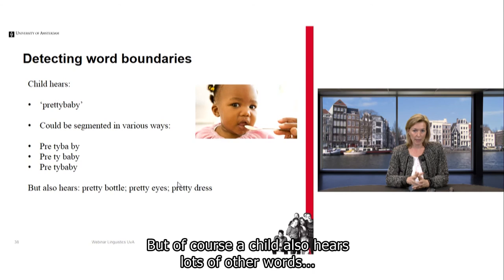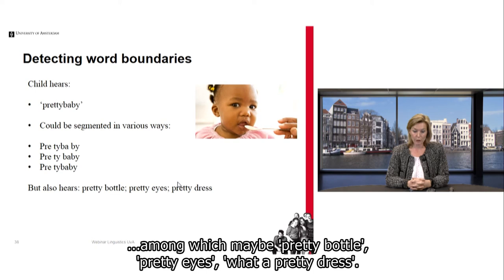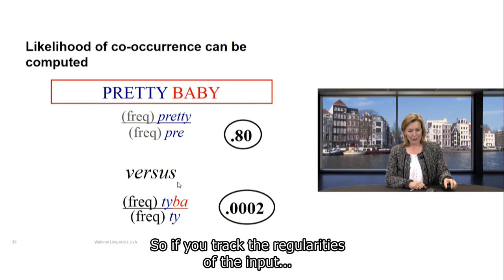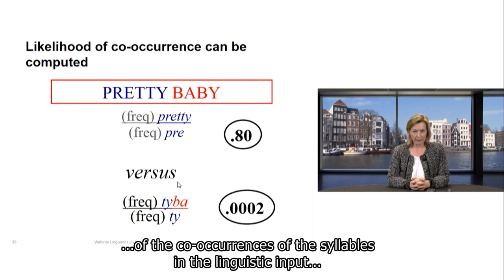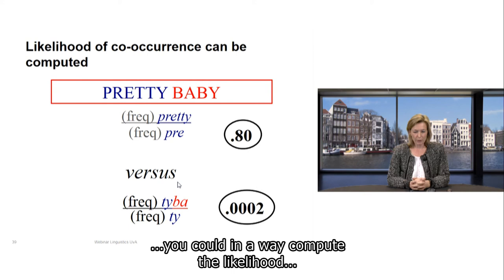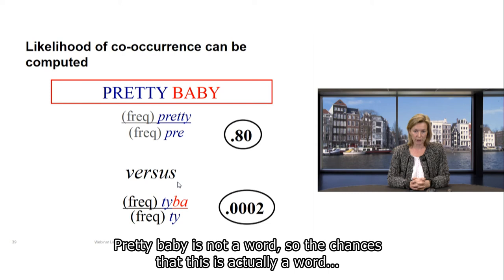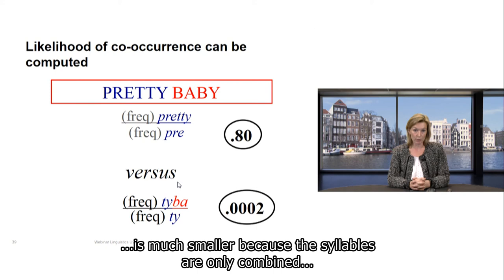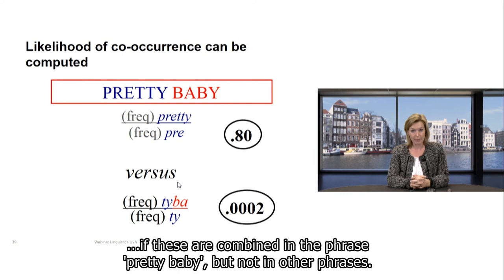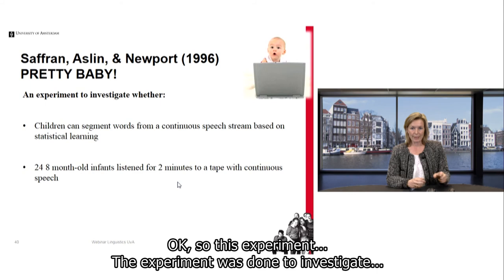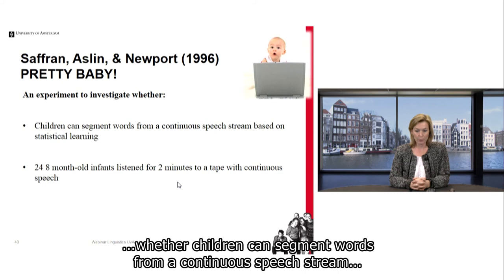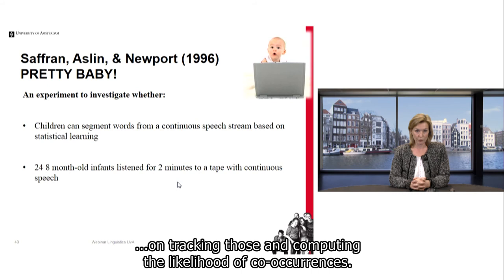If you track the regularities of the co-occurrences of the syllables in the linguistic input, you could compute the likelihood that these syllables occur next to each other. Because 'pretty' is a word, its syllables 'pret' and 'ty' will often be combined together. The syllables at the boundary of 'pretty baby' are only combined in that specific phrase, so their co-occurrence likelihood is much smaller. This experiment investigated whether children can segment words from a continuous speech stream solely based on statistical learning — tracking and computing the likelihood of co-occurrences.